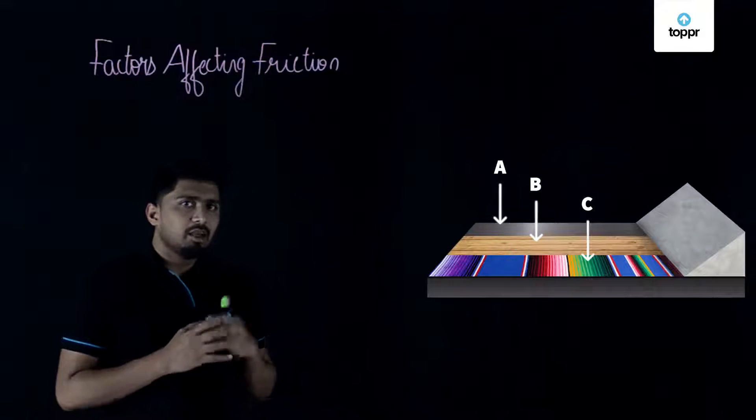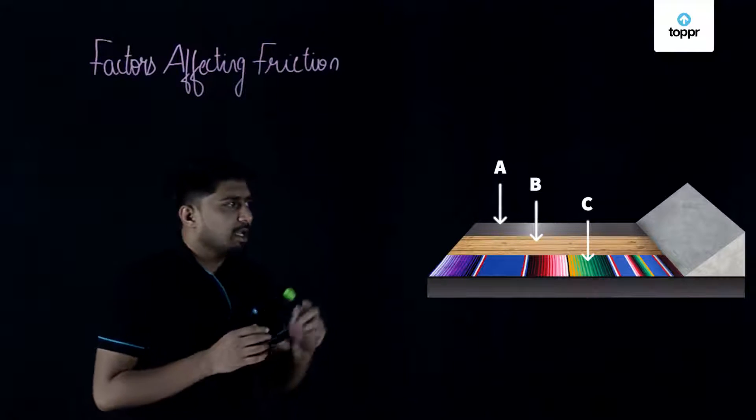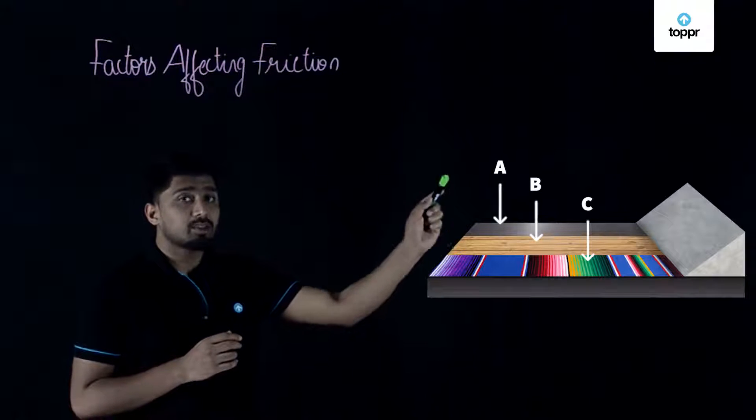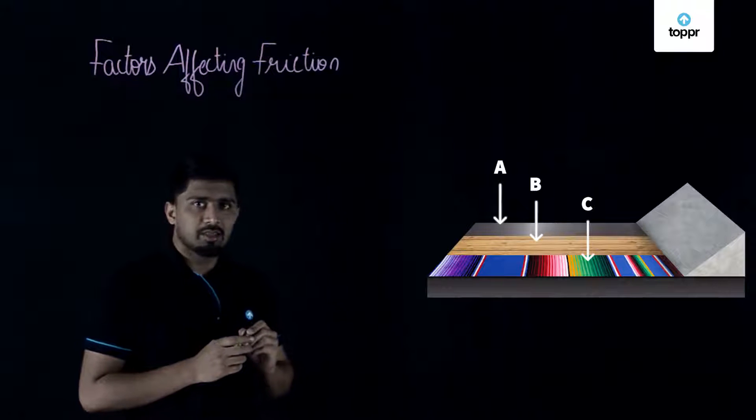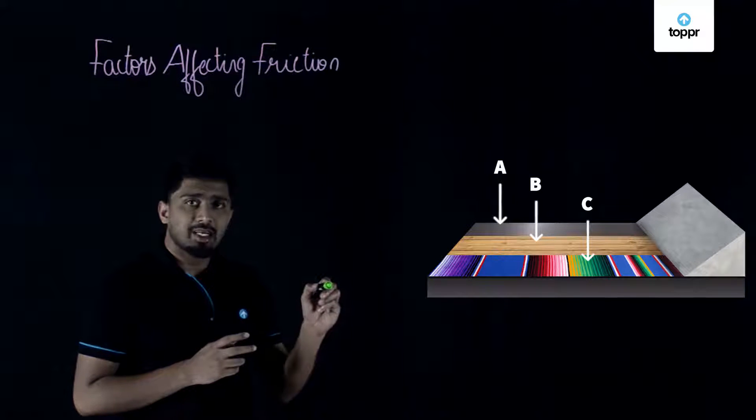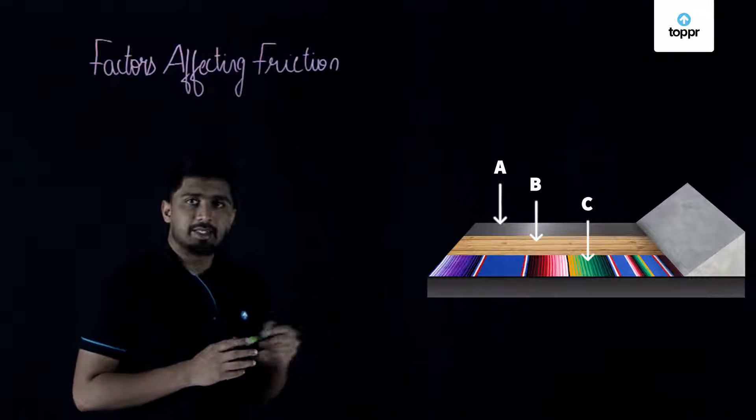So students if you observe you can see that on the smooth surface the box had covered the maximum distance and on the very rough surface the box had covered the minimum distance.